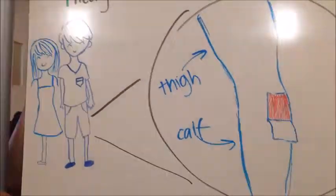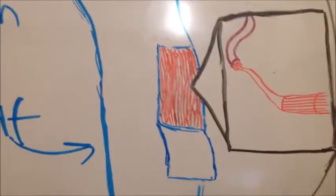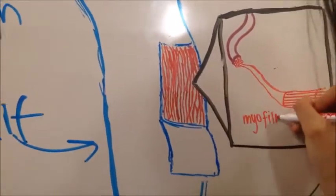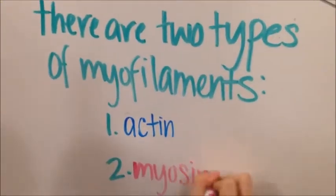The muscles are made up of muscle fibers. Within the muscle fibers are myofibrils, and within the myofibrils are myofilaments. The two types of myofilaments are actin and myosin.